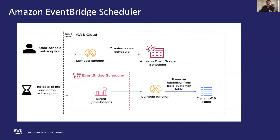Previously, many customers used commercial off-the-shelf scheduling tools or built their own to trigger batch jobs or workflows. Custom code can increase application complexity, slow down development, and increase cost, and many custom scheduling solutions are limited in which AWS services they can trigger. Enter Amazon EventBridge Scheduler — a new capability that allows you to create, run, and manage scheduled tasks at scale. With EventBridge Scheduler, you can schedule one-time or recurring tasks across tens of millions of executions across many AWS services without provisioning or managing underlying infrastructure.